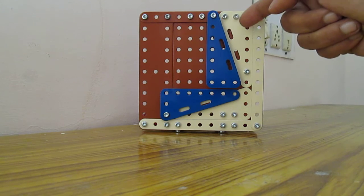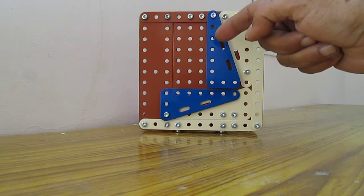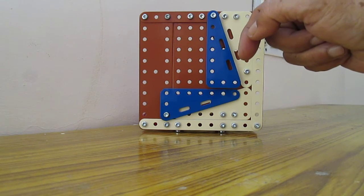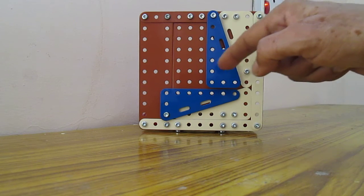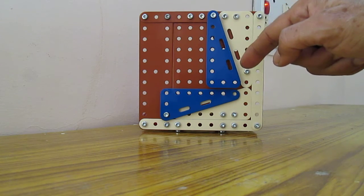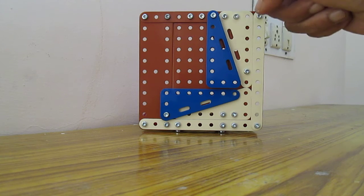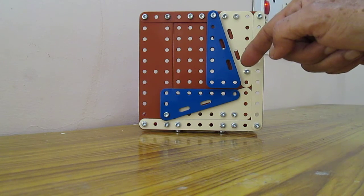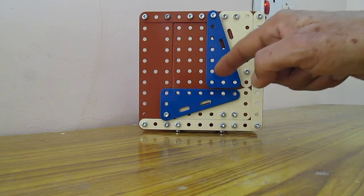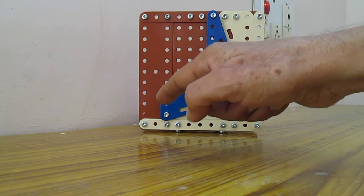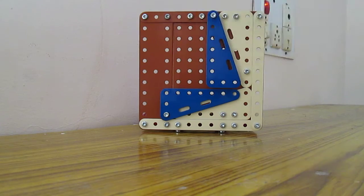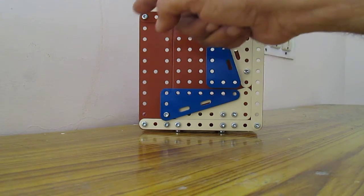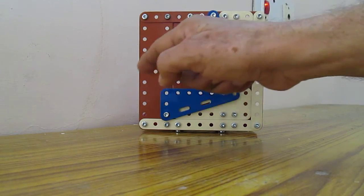These are four equal sized triangles. We can call this side as side A, this as side B, and the hypotenuse as side C. Similarly, this is side A, this is B, and this is C. So the ground area, we can say this as A square and this as B square.